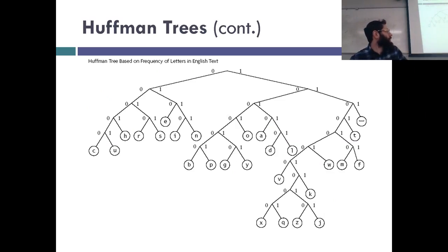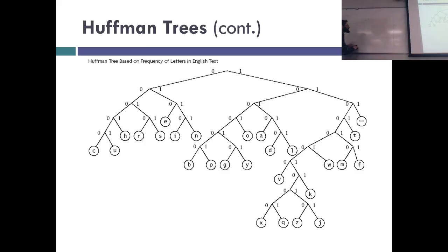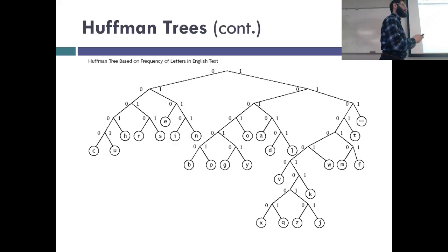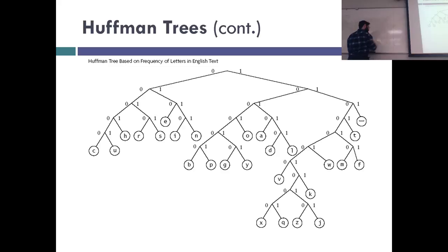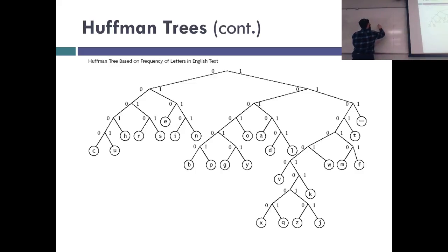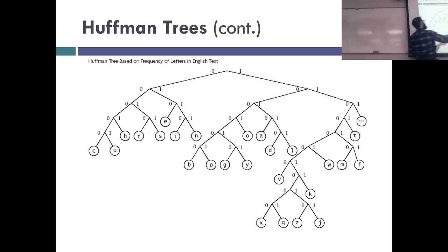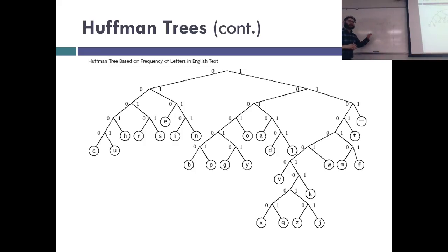To use a Huffman tree to decode a message: if the message is 'hi,' H is encoded as 0,0,0,1 and I is encoded as 0,1,1,0. So the bit sequence sent is 0,0,0,1,0,1,1,0. The receiver uses the Huffman tree: sees a 0, goes left; 0, left; 0, left; 1, right — hits a leaf — that's H. Then starts from the root again: 0, left; 1, right; 1, right; 0, left — hits I. Only the letters are at leaves.